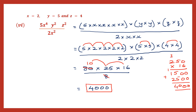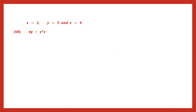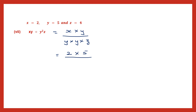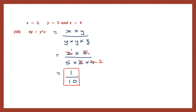Question 7 of question 9: xy divided by y squared into z. That means x into y, divided by y into y into z. Substituting: x is 2, y is 5, so numerator is 2 into 5; denominator is 5 into 5 into 4. Cancel one 5, and cancel 2 and 4 — 2 twos are 4. In the numerator we have only 1, and in the denominator 5 into 2 is 10. So the answer is 1 by 10.